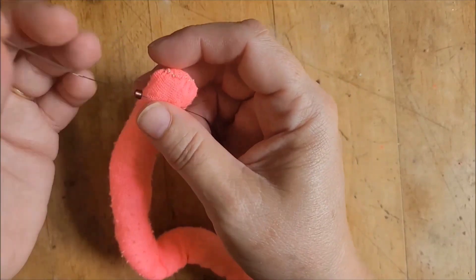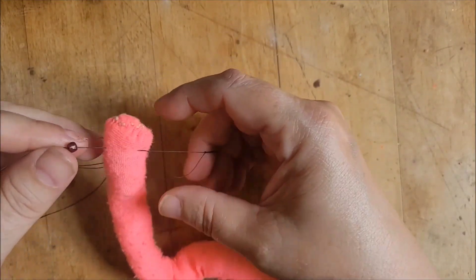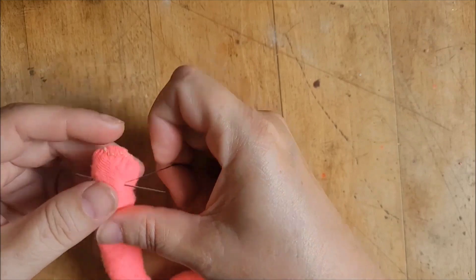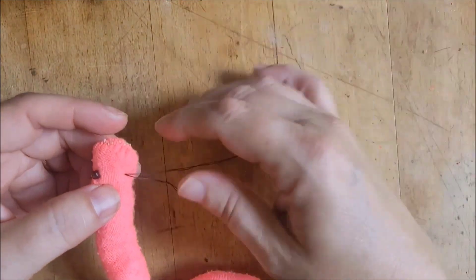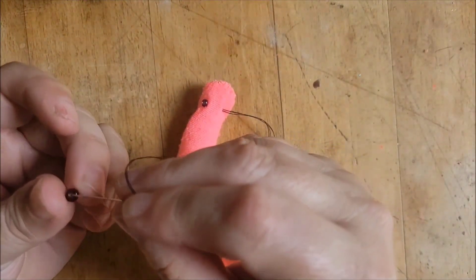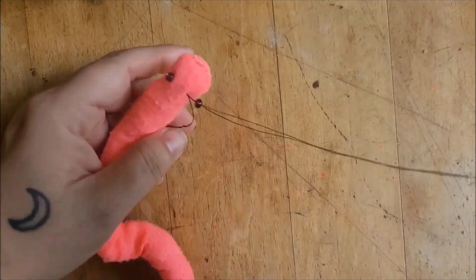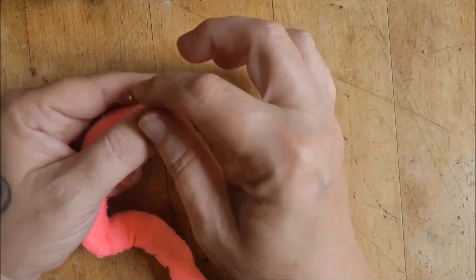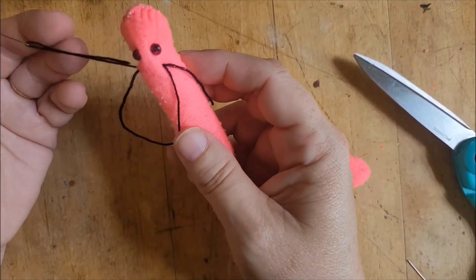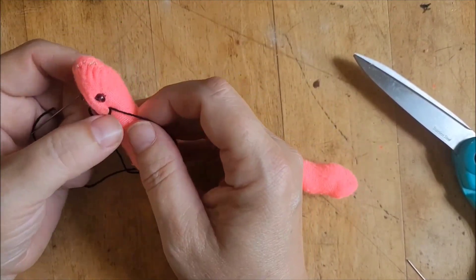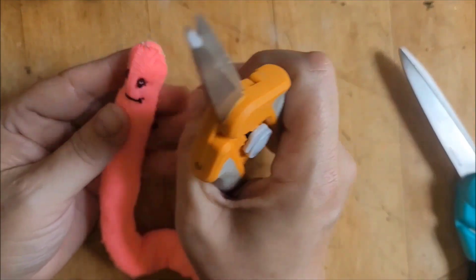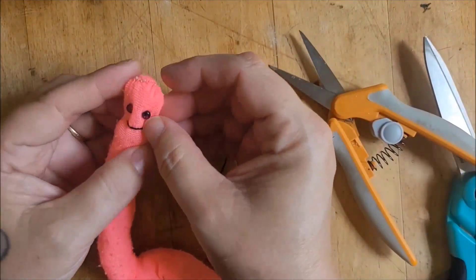I've used beads for eyes, but I bet that googly eyes glued into place would be super cute. You could totally paint or draw or use little snips of felt to add features instead of sewing them into place. Make changes to your buddy or bookworm to suit you.